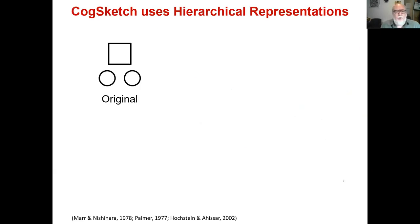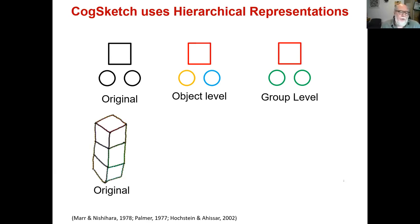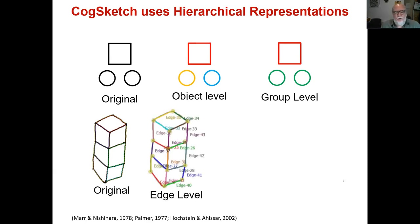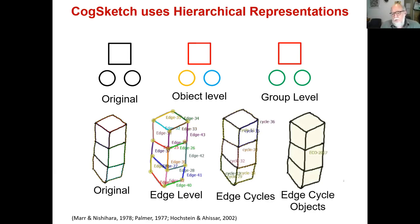CogSketch performs all sorts of visual computations that are very human-like. Suppose you drew two circles and a square — at the object level it knows these are three distinct objects, but it can also group them based on similarity. If you draw a stack of cubes, CogSketch carves that up into edges and junctions, then turns those into edge cycles and identifies whole objects — basically constructing the things out of which you would build surfaces in a visual basis. The citations at the bottom reference the vision science literature that motivated these representations.